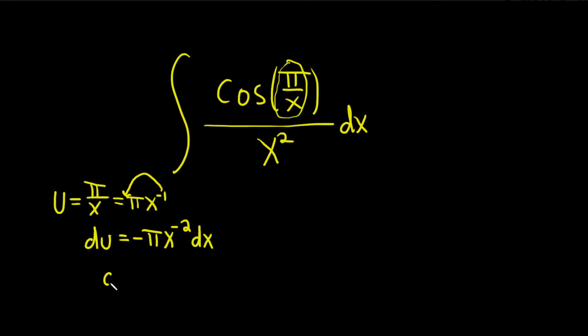We can bring this downstairs, so we have du equals negative pi times 1 over x squared dx. So we have the 1 over x squared in the problem. What we don't have is the negative pi, so let's get rid of it by dividing both sides by negative pi.